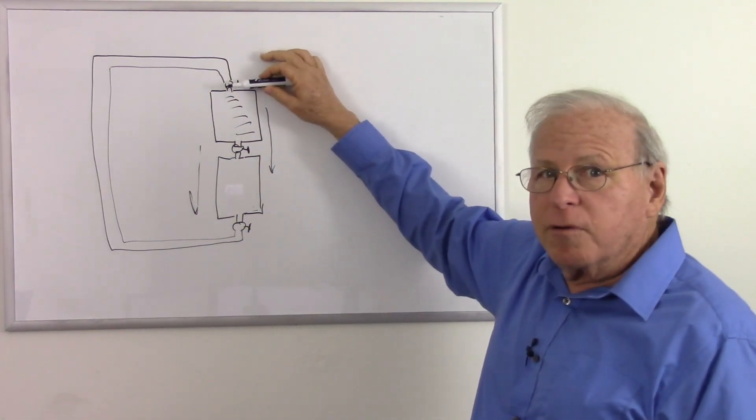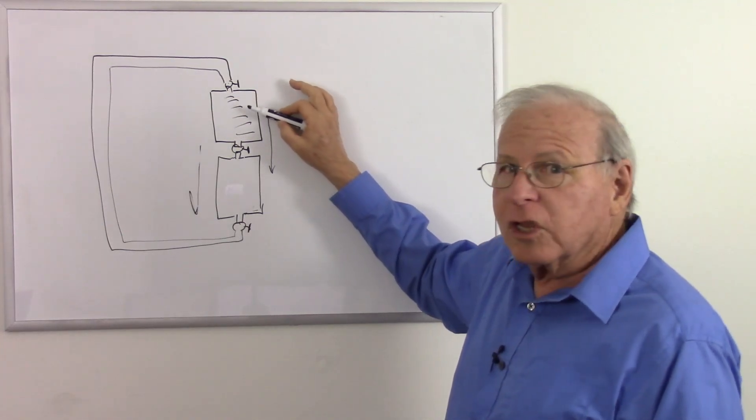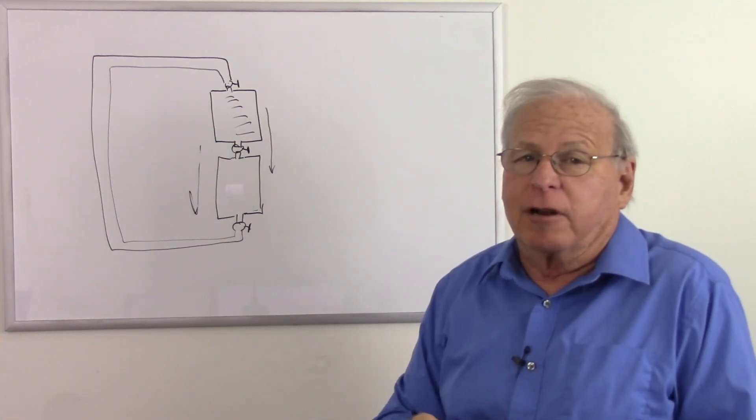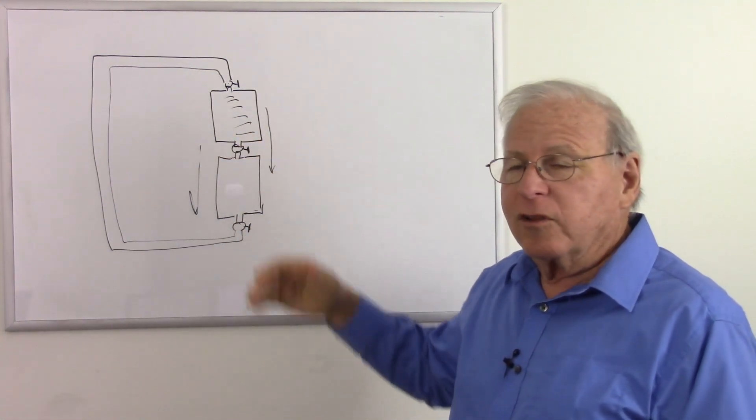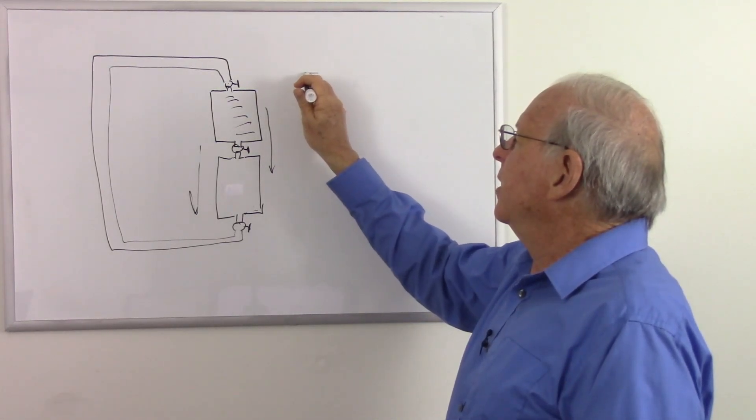Now, we have gravity providing the impetus to make this happen, but a battery has its own little pump in there, a little electron pump. That's what batteries basically are, are electron pumps. And they can pump electrons from one side to the other, just like, well, I like to use a vacuum cleaner as an example.